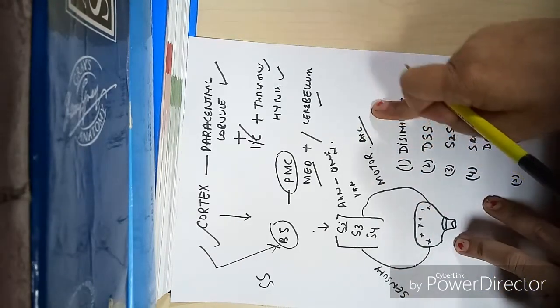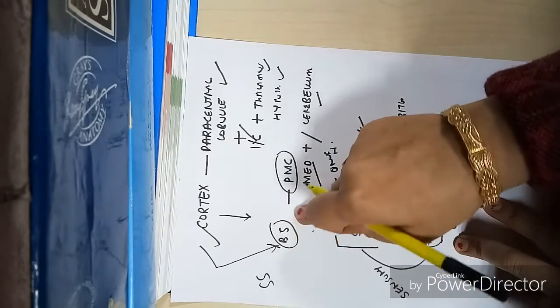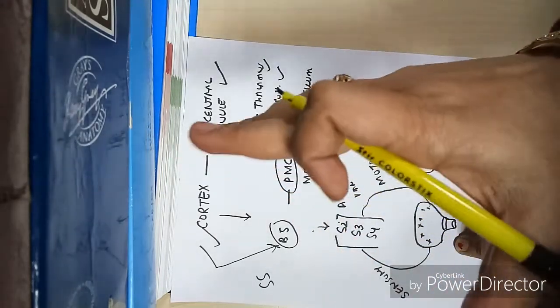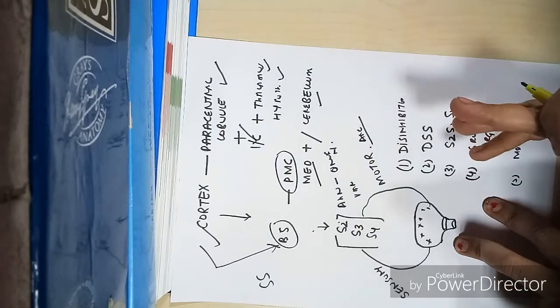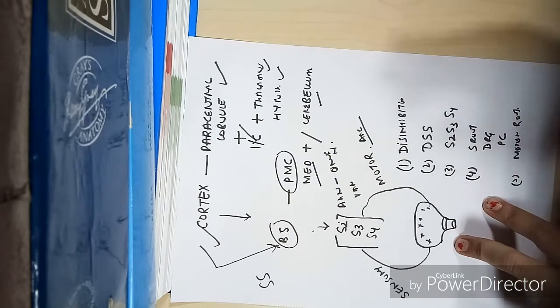Lesions at any of these levels can cause various types of neurogenic bladder. The major categories are as follows.